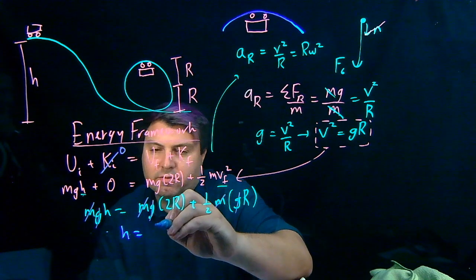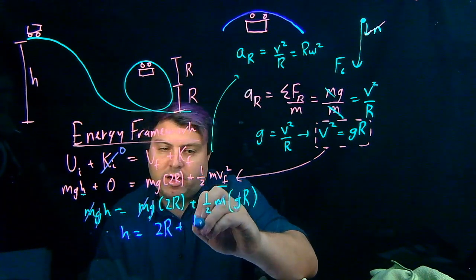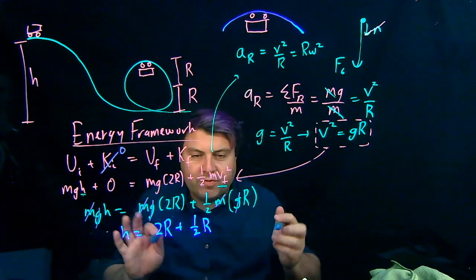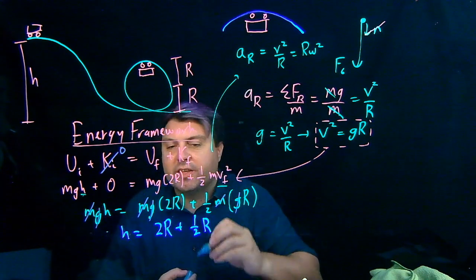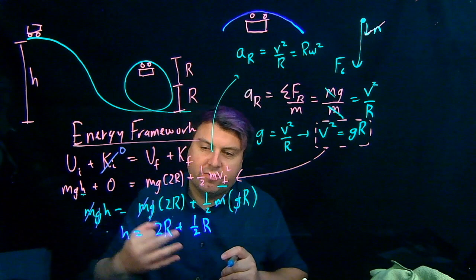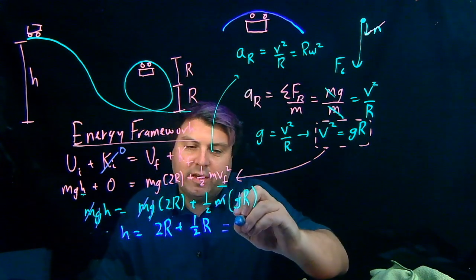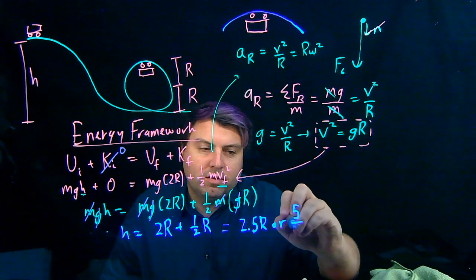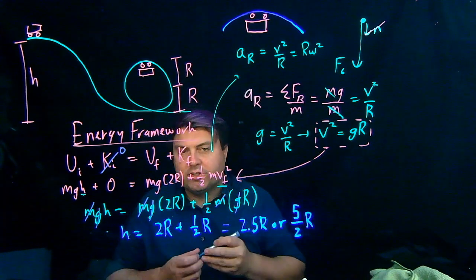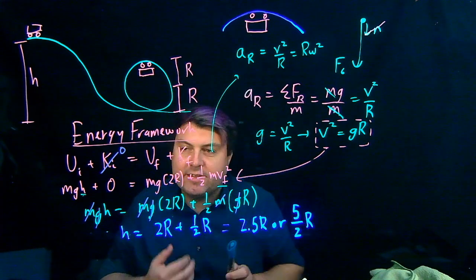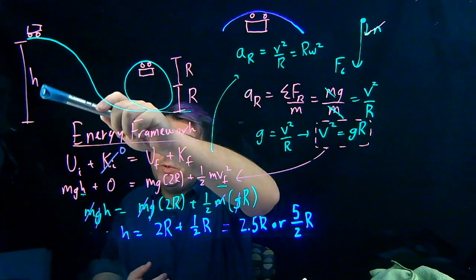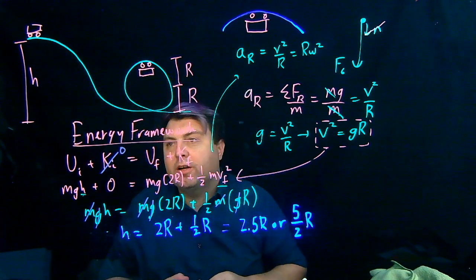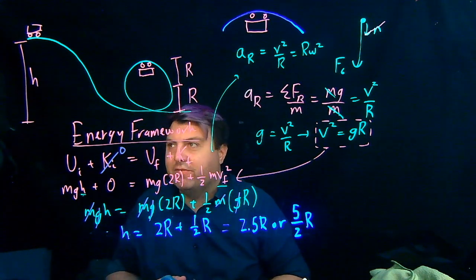We get h equals 2r plus one-half r. We can write 2 as four-halves, giving us h equals five-halves r, or 2.5r. That is the minimum height needed so that when the cart goes around the loop-de-loop, it stays on the track and doesn't fall off.